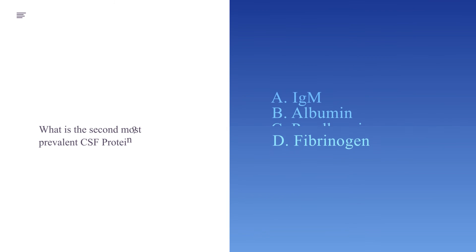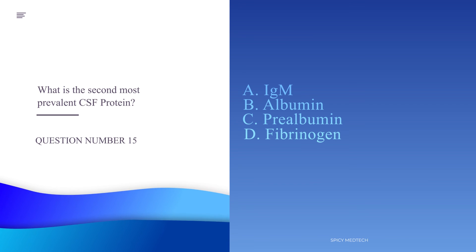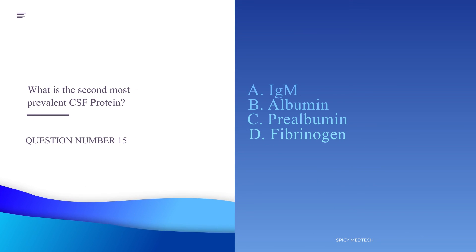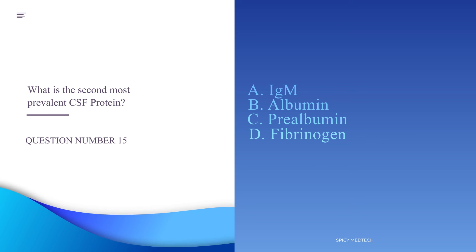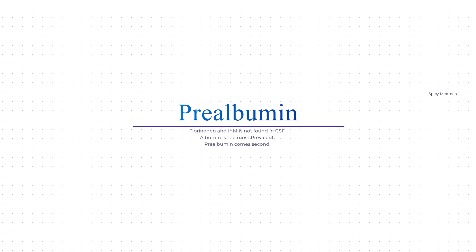Number fifteen: What is the second most prevalent CSF protein? A. IgM, B. Albumin, C. Prealbumin, or D. Fibrinogen. The answer is letter C, prealbumin. Prealbumin is the second most prevalent protein in CSF, while albumin is the most prevalent. IgM is not present in CSF, along with fibrinogen and lipids.